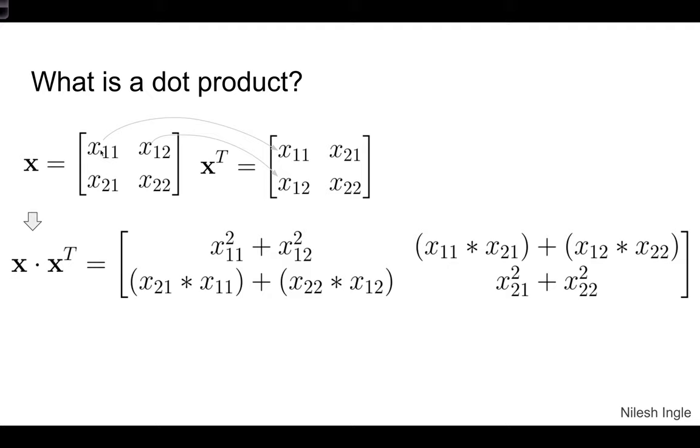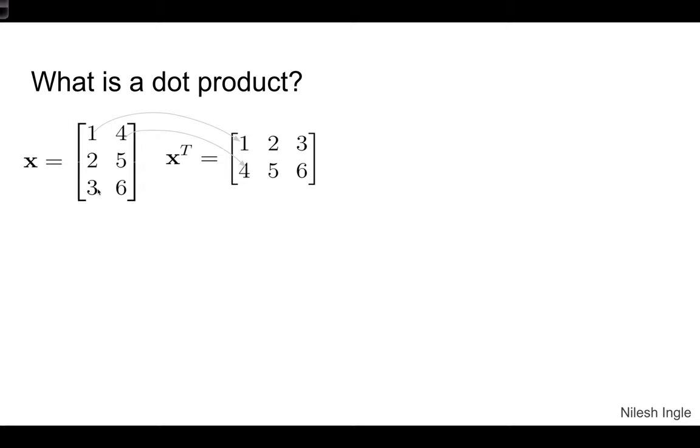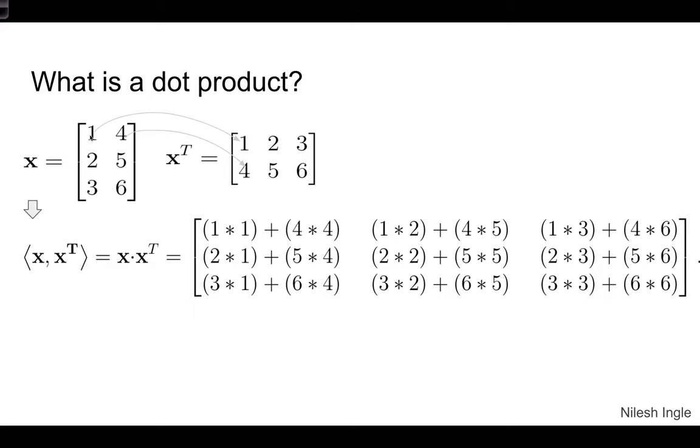So x11 multiplied by x11 plus x12 multiplied by x12, and then for the next one we are going to go x11 multiplied by x21 plus x12 multiplied by x22, and so on. If we look at an actual example, we have 1, 2, 3 in first column, 4, 5, 6 in the second column. We flip that—they become the rows shown here. If we do a dot product, this is how we'll multiply: 1 by 1 plus 4 into 4, and so on for the other terms.